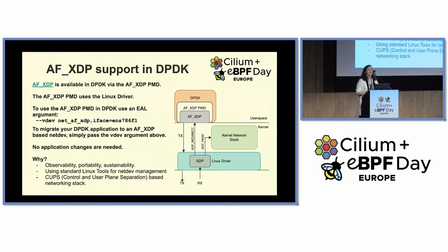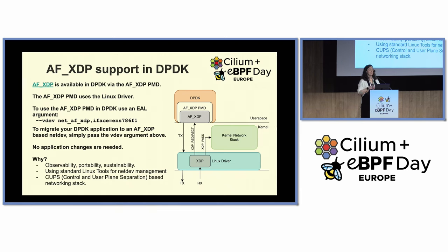You might be wondering: is this supported in DPDK? AF_XDP has been supported in DPDK since its inception — it's available via the AF_XDP PMD. That PMD is actually using your standard Linux ICE or I-40E driver; it's not using VFIO-PCI or IGB-UIO. It's the actual Linux netdev being consumed by the AF_XDP PMD. If you want to use it as part of your DPDK application, you simply need to pass a command line argument — the minus-minus VDEV argument. What's really cool is it gets consumed as part of the core arguments at every single DPDK application startup. So to transition from your existing PMD to AF_XDP, all you need to do is pass this command line argument, and it's done. No other application changes should be needed from the DPDK point of view.